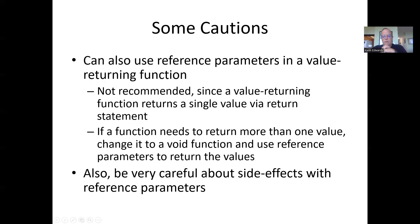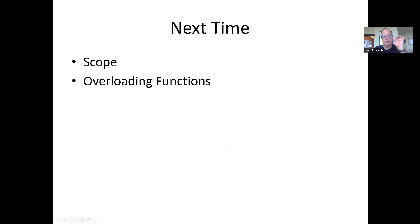You can use reference parameters in a value-returning function—it's not prohibited—but we typically do it with void. If we have a value-returning function, we expect to get a single value returned back. If a function needs to return more than one value, the idea is to change it to a void function and use reference parameters to return the values. Also, be very careful about the side effects with those reference parameters.